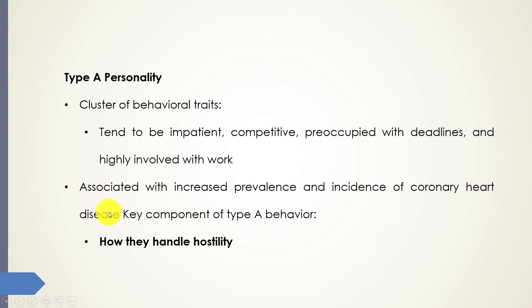If anyone asks you what it is about the Type A that makes it more prone to heart disease, the answer is that one of the key components of the Type A behavior is how they handle hostility. The hostility is really what increases the risk for heart disease. Now let's talk about Type B.